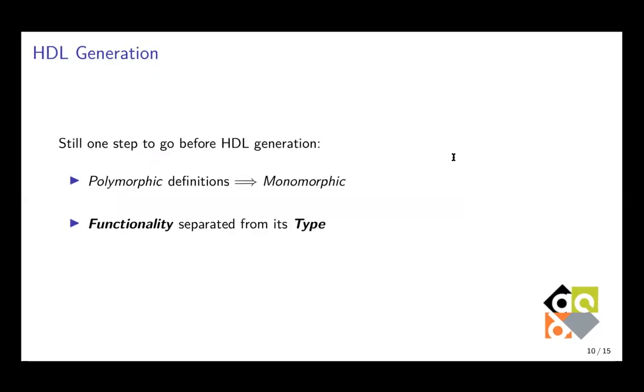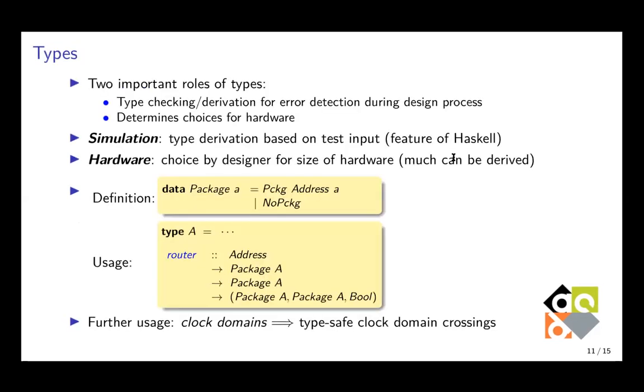Before we now can generate hardware description language from this, we still have to make one step, that is the polymorphism. That is very pleasant for experimenting and designing, but hardware is strict in how many wires you use for your types and so on. So you have to make it monomorphic rather than polymorphic. But happily, functionality is separated from its type, so you can do this by choosing a specific type. And then apart from the type checking and for error detection, you can also use types for determining your choices for the hardware.